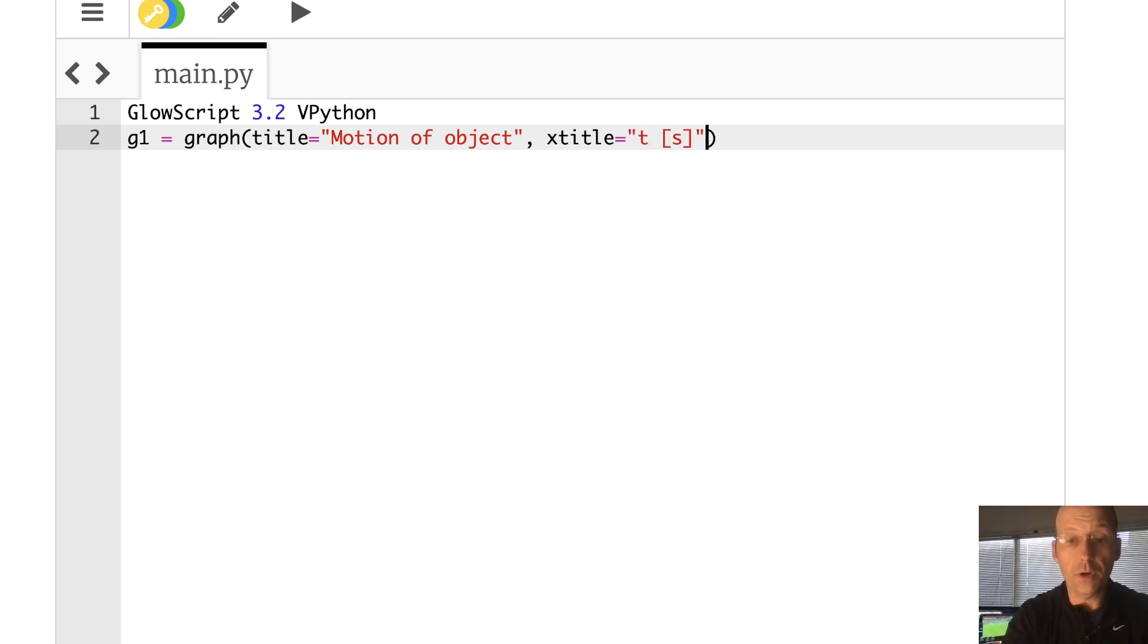And then we will give it a y title of x as a function in meters. Now, one of the other things we want to do is to give it dimensions. I just realized you can see the soccer game on the back. But I think physics is more important, so I'm watching the physics right now.